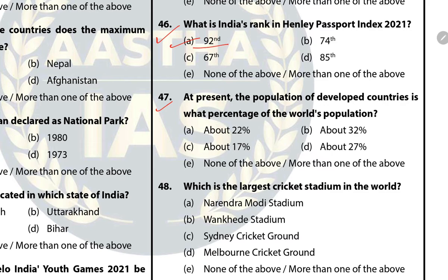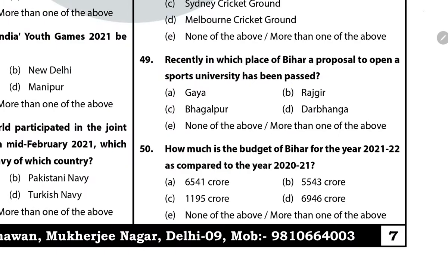Question 48: Which is the largest cricket stadium in the world? The answer is A — Narendra Modi Stadium. Question 49: Recently, in which place of Bihar a proposal to open a sports university has been passed? The answer is B — Rajgir. It will be the sixth sports university in the country.